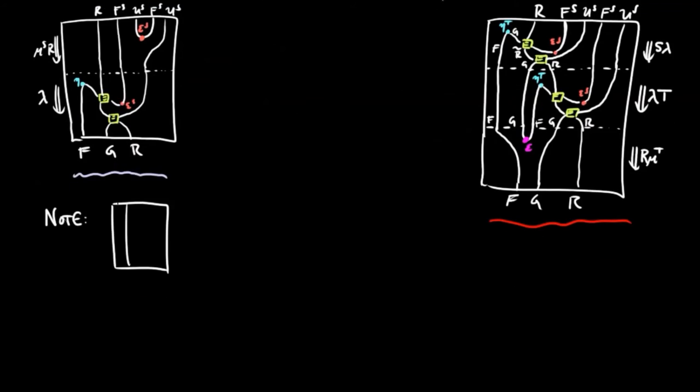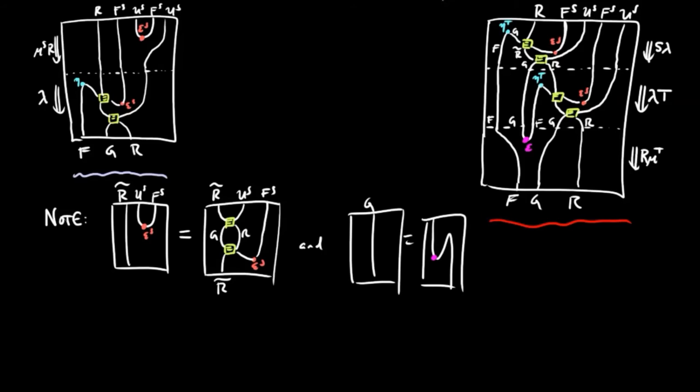We note that the string diagram for epsilon s r is trivially equal to the following. Also, the triangle identity for f g gives us the following equality of string diagrams.